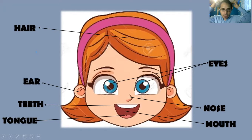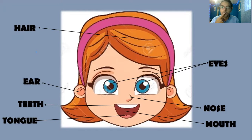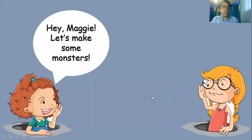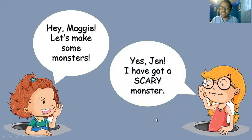Entonces tenemos hair, eyes, ears, nose, mouth, teeth, and tongue. Tenemos a Jen y a Maggie. Veamos qué dicen. Jen dice: 'Hey Maggie, let's make some monsters.' Van a hacer algunos monstruos. Maggie dice: 'Yes Jen, I have got a scary monster.' Tiene un monstruo que da miedo — scary monster.